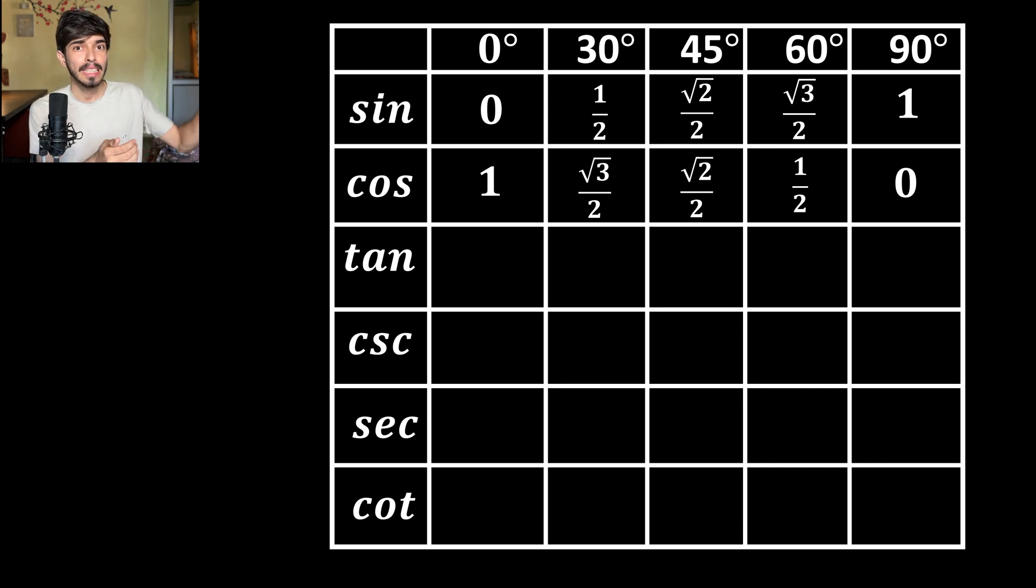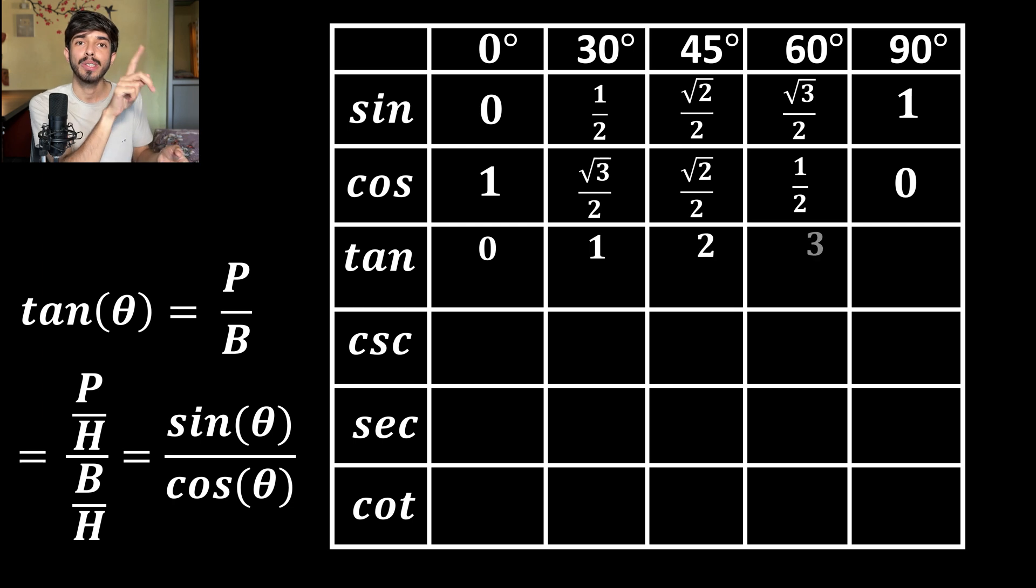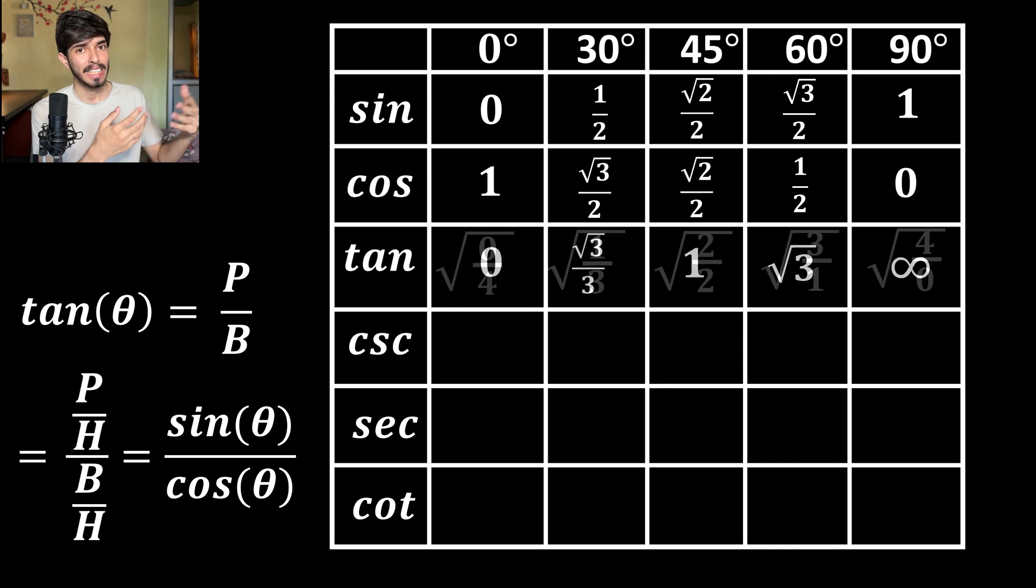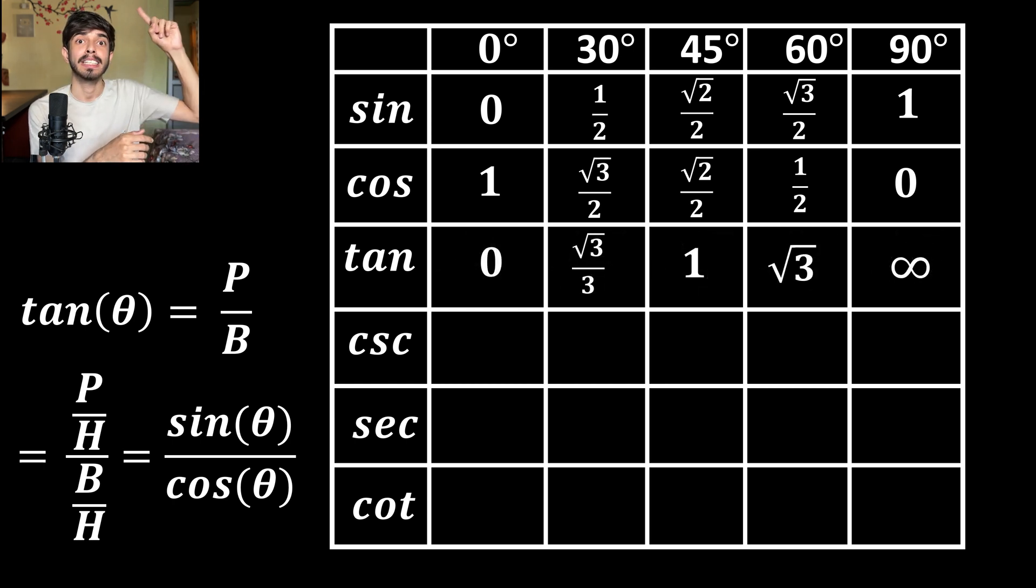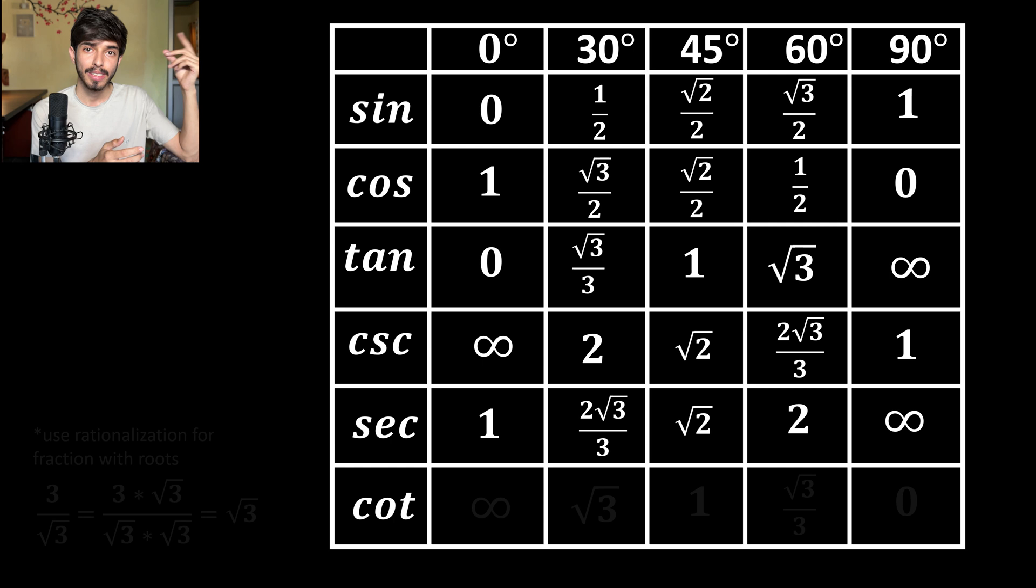For tan theta, what you can do? You can divide sin theta by cos theta. Because see, tan theta is perpendicular upon base. Sin theta is perpendicular upon hypotenuse. Cos theta is base upon hypotenuse. If you divide sin theta and cos theta, you get tan theta. So, dividing the above two rows, we can get tan theta. Or you can do it like this: 0, 1, 2, 3, 4 by 4, 3, 2, 1, 0. Square root. You will get the value of tan theta. And for cosecant theta, just take the reciprocal of sin theta. For secant theta, just take the reciprocal of cos theta. And for cot theta, just take the reciprocal of tan theta.